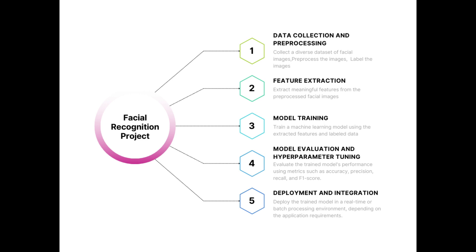The steps for building a face detection project are: first, collect and pre-process a diverse dataset of facial images, label them. Second, feature extraction — extract meaningful features from the pre-processed facial images. Third, model training — train a machine learning model using the extracted features and labeled data. Fourth, model evaluation and hyperparameter tuning using metrics such as accuracy, precision, recall, and F1 score.